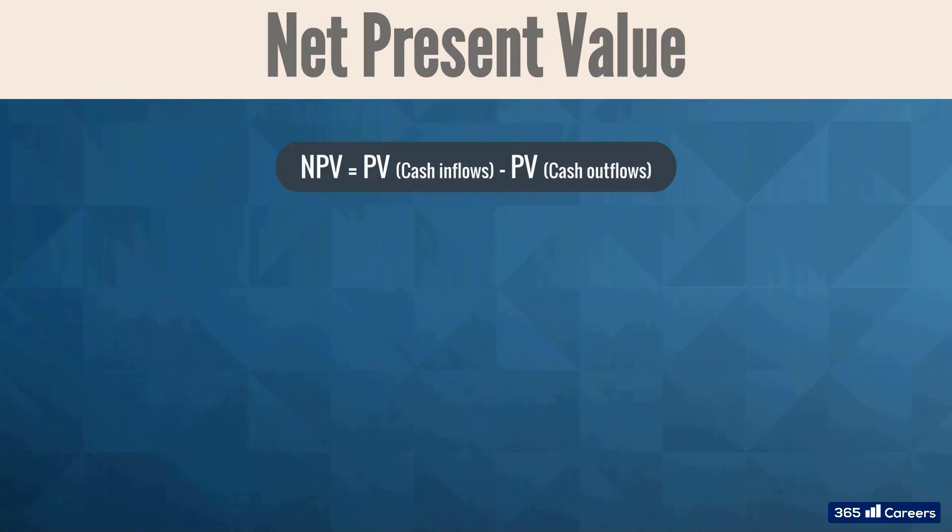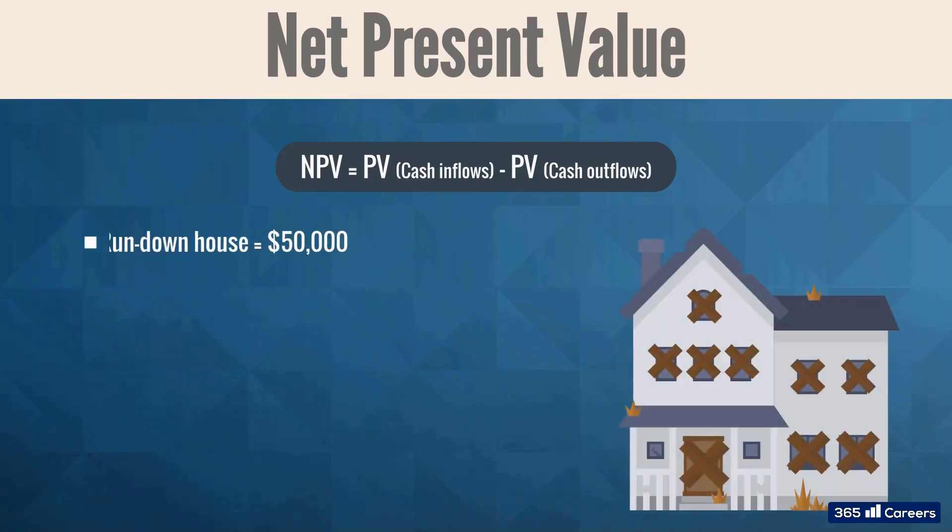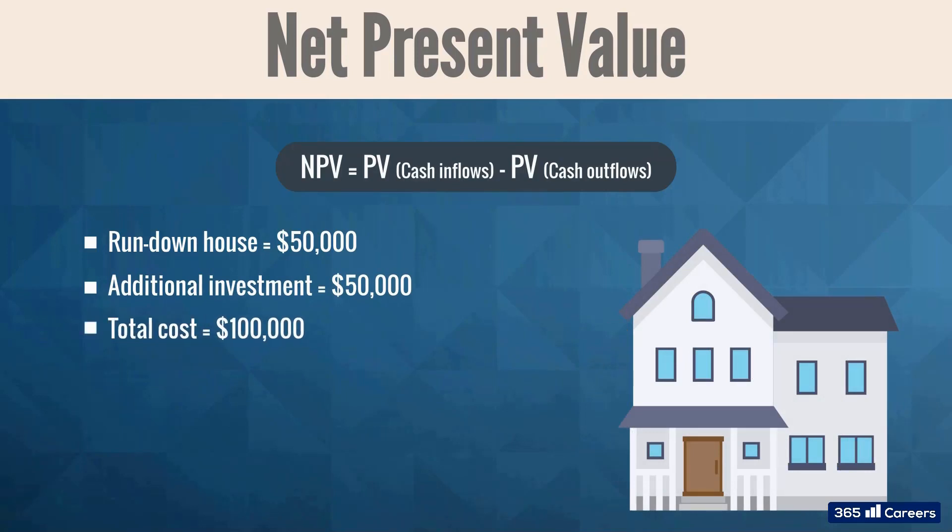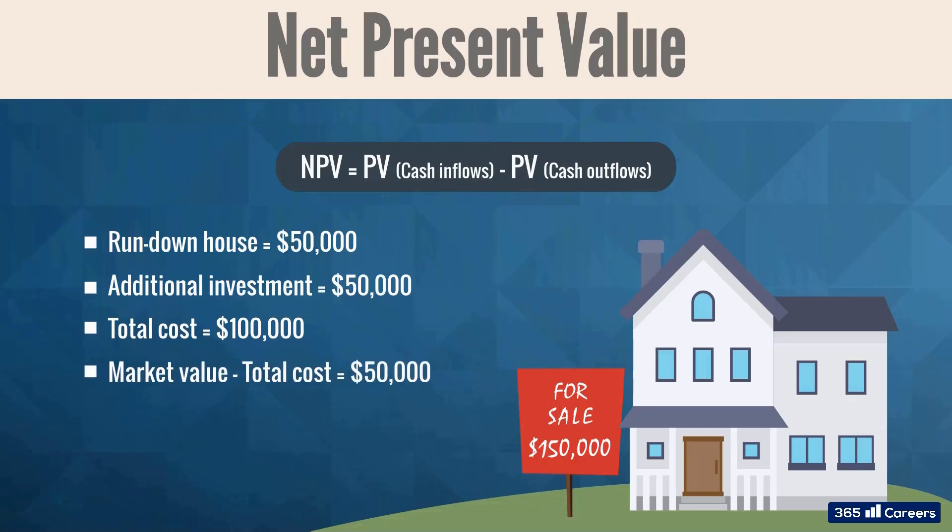Consider the following example. Suppose we buy a rundown house for $50,000 and spend another $50,000 on painting, flooring, and other renovation work to fix it up. Our total investment amounts to $100,000. After the renovation is completed, we list the house back on the market and find that it is worth $150,000. The market value, $150,000, exceeds the cost, $100,000. The net result is that we've gained $50,000 in value.